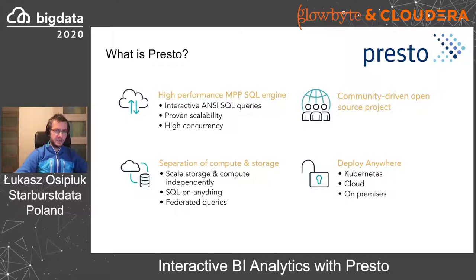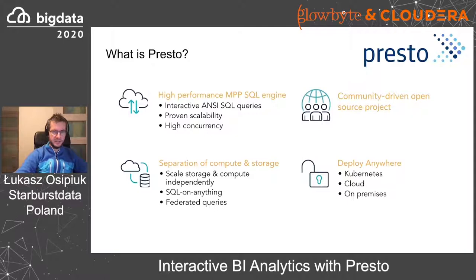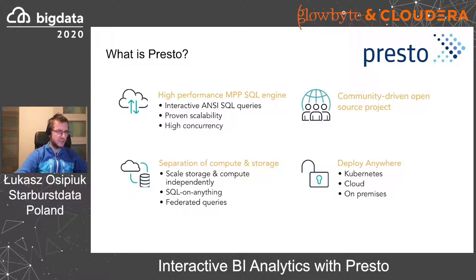Originally, Presto comes from Facebook, yet from the very beginning it was developed as an open-source project targeting more use cases than only those specific to Facebook. One of the unique features of Presto is that it allows full separation of compute and storage layers. That allows you to scale the two layers independently — you can add more storage space as new data appears without adding compute nodes, then boost compute when you need to perform lots of analytics, and scale back when you don't. This provides a lot of elasticity and allows you to operate in a cost-effective manner.